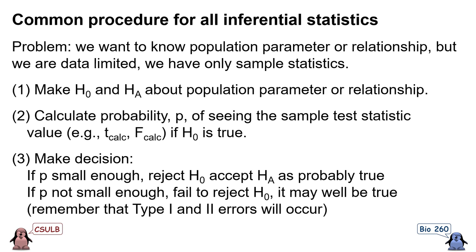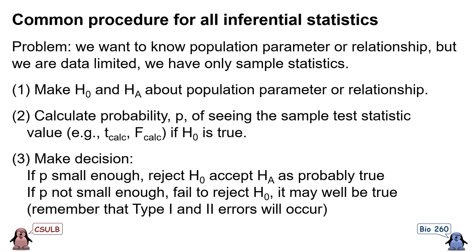Whether you're doing a parametric or nonparametric statistical technique, there is a common procedure for all inferential statistics. The first step will always be to make a null hypothesis and an alternative hypothesis about the population parameter or relationship. The second step will be to compute the probability of seeing some kind of sample test statistic value — for example, the t-calculated or f-calculated value — if the null hypothesis is true.